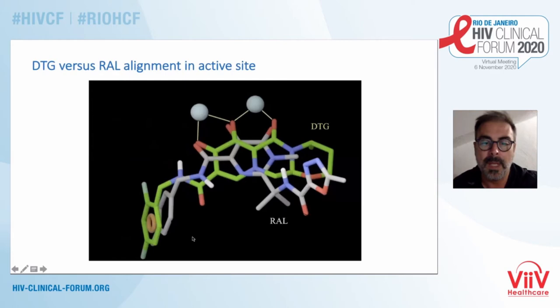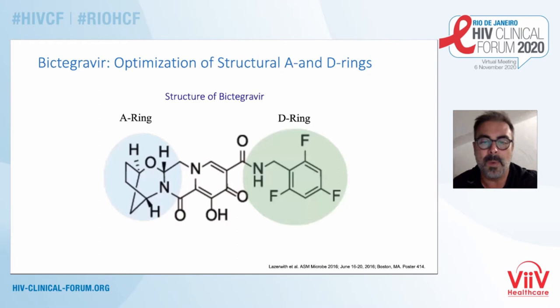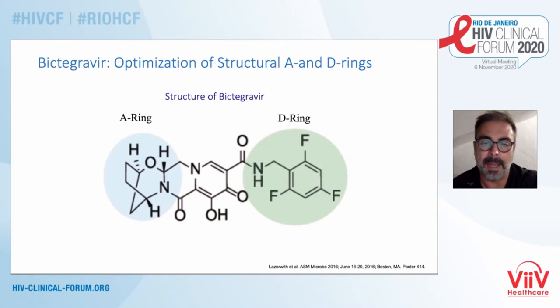This molecular structure compares dolutegravir in green with the raltegravir molecule. Both molecules share a moiety that sequesters the two magnesium ions, but they differ slightly in structure. Dolutegravir is more flexible and better able to bind into the INSTI catalytic site even in the presence of resistance mutations, and something similar also applies to bictegravir. Successive changes in the delta ring of the benzyl moiety and also in the alpha ring have made these drugs more efficient, binding longer and able to inhibit viruses resistant to first-generation INSTIs.